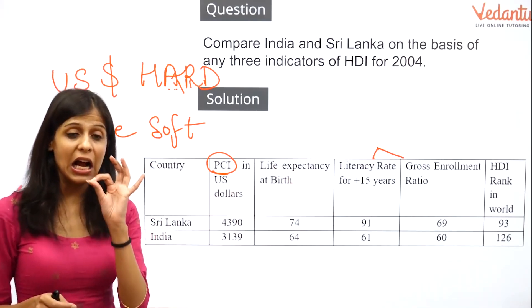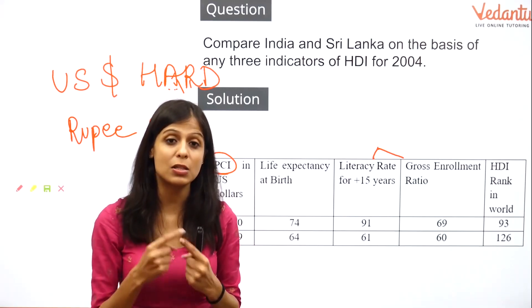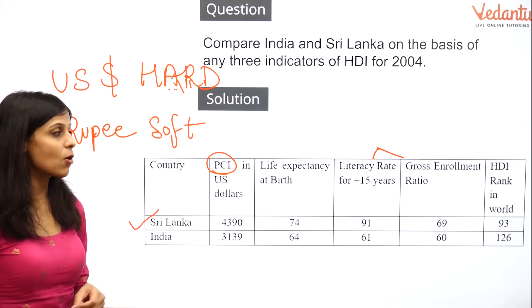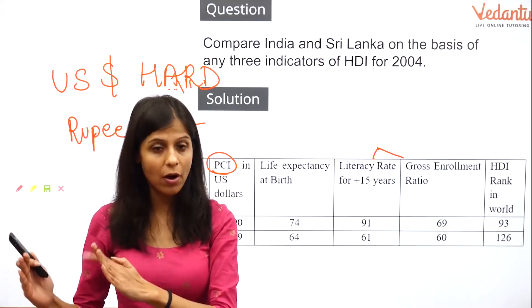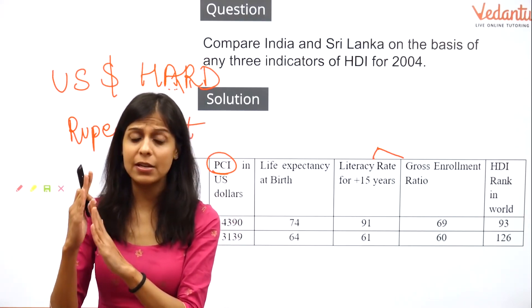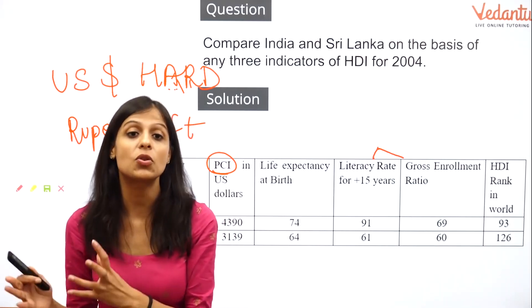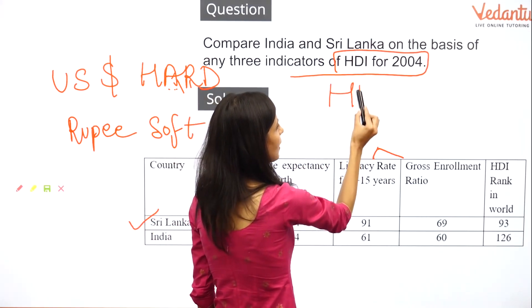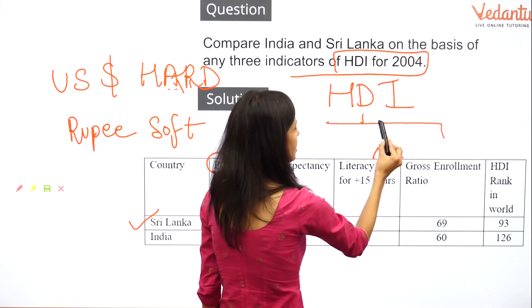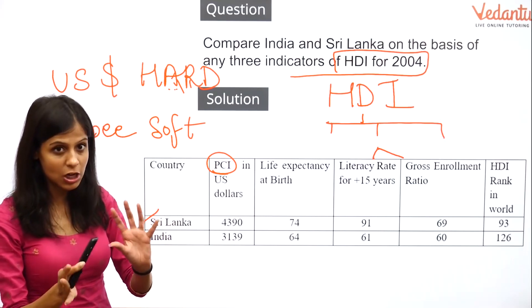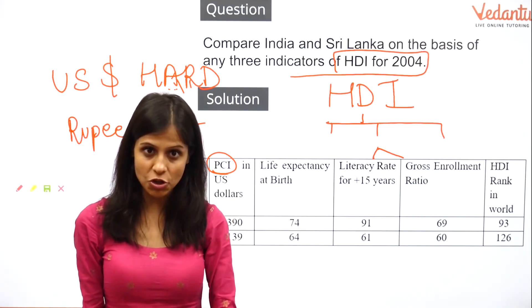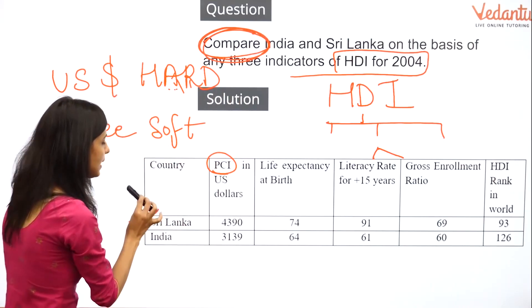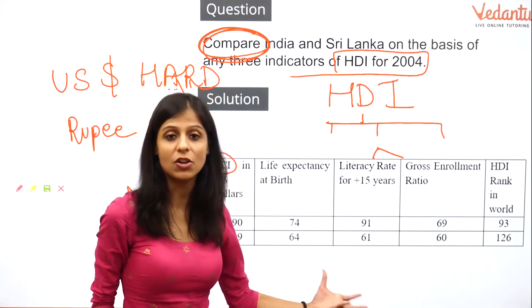Using these basic parameters, we can conclude a country's ranking and how well it is performing. The higher the score, the better the economy is performing. For example, Sri Lanka's HDI score in 2004 was 93. The HDI index is updated every year with new figures. When answering this question, first explain the three basic parameters, then divide the education parameter into two dimensions, and finally make a comparison chart so it's clear for your teacher.